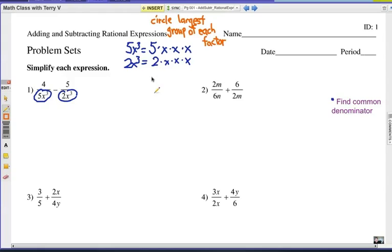The largest group of each factor means this. Let's start at the lowest number, 2. I see a single 2 there and no other 2s, so I'm going to circle it. That's the largest group of 2s. Then I have a 5. That's the largest group of 5s. There are no other 5s. Then I have 3xs here and 3xs here. Now if it's a tie, just circle one group and ignore the rest. You can even cross them out. So the largest group of 2s is a single 2. Largest group of 5 is a single 5. Largest group of xs is 3xs. That's what I mean by circle the largest group of each factor.